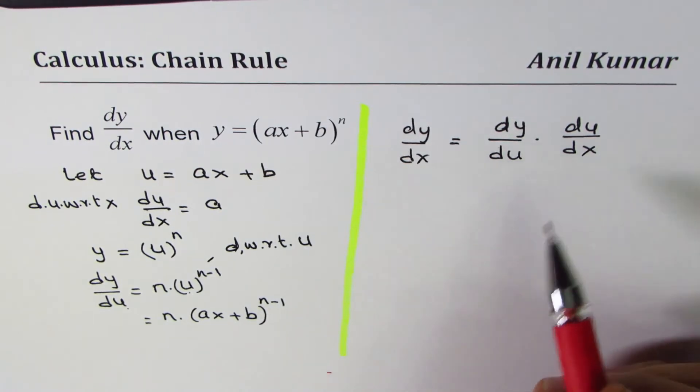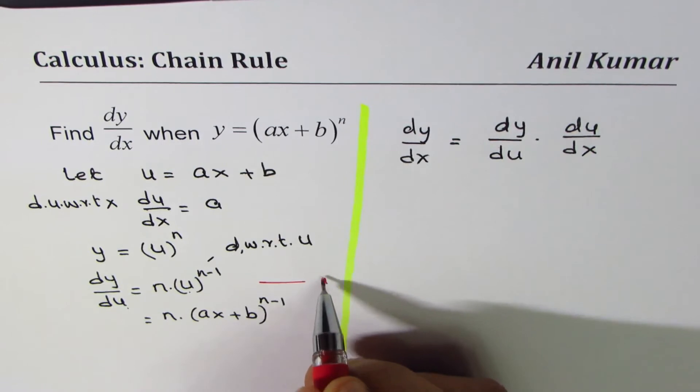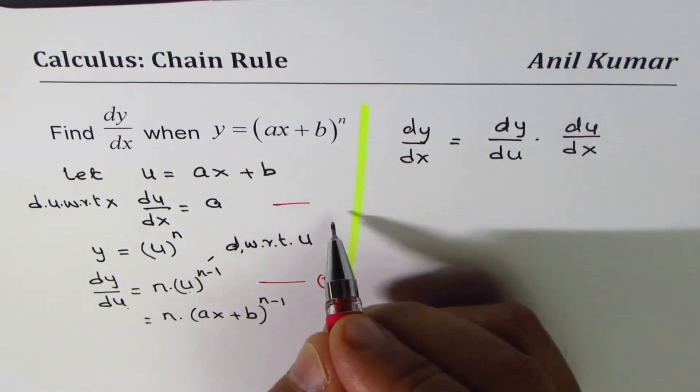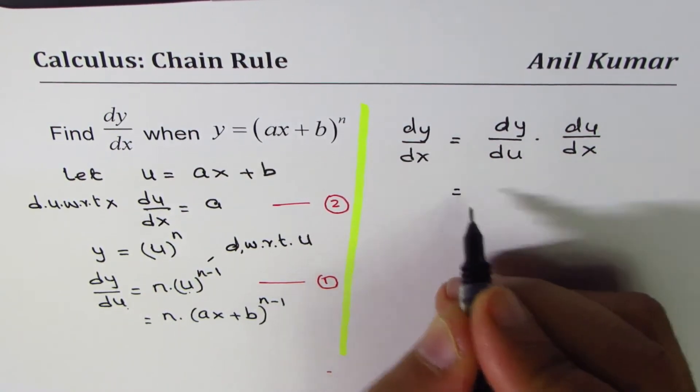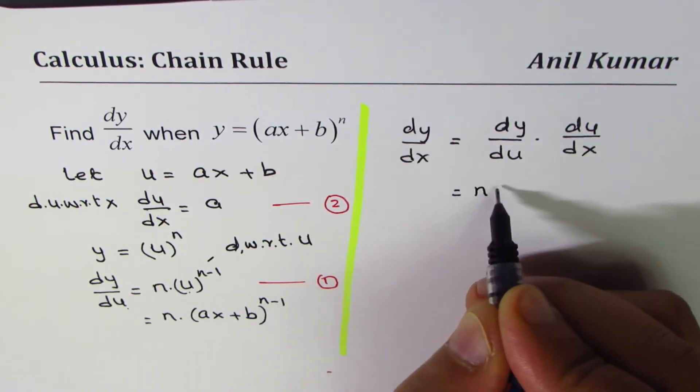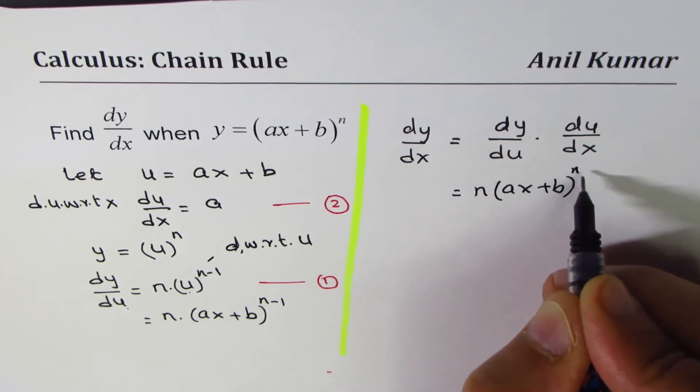Now, we found dy/du here. So let me call this as our equation number 1. And du/dx we found first. Let me call that as equation 2. So substituting their values, we get dy/du as n times ax plus b to the power of n minus 1.